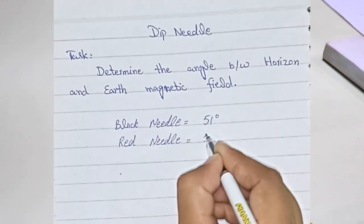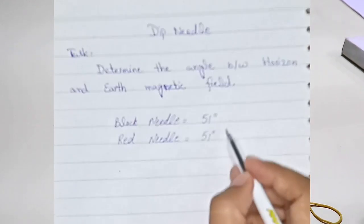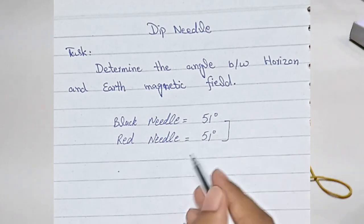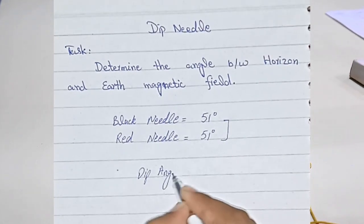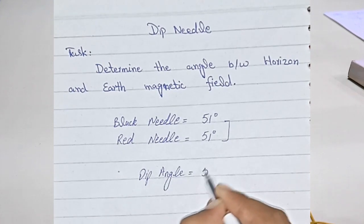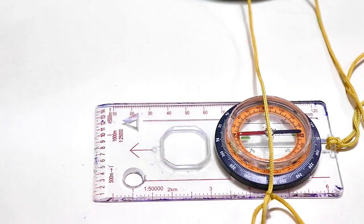51 degrees. So, the average is the dip angle. The same value is 51 degrees. So, at this time, we see the dip angle we have here on Earth for us.